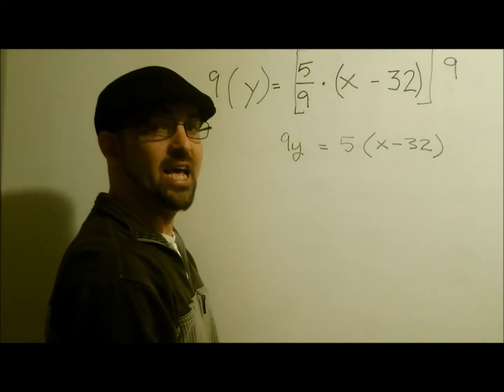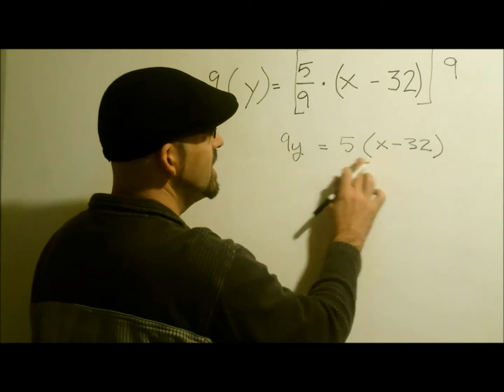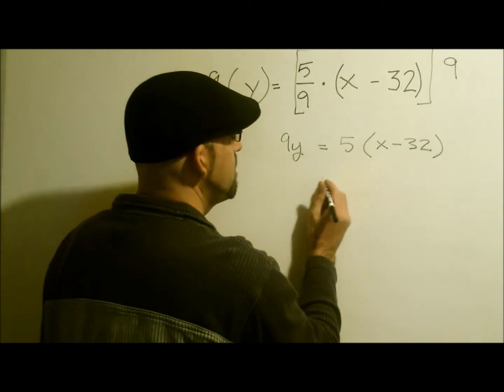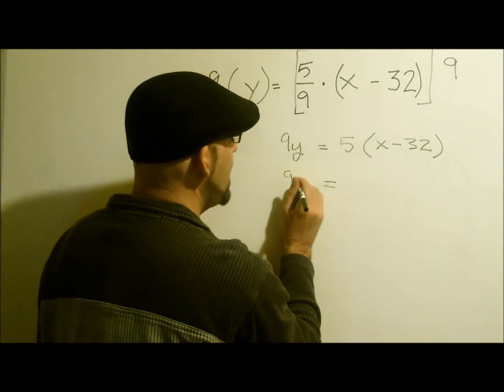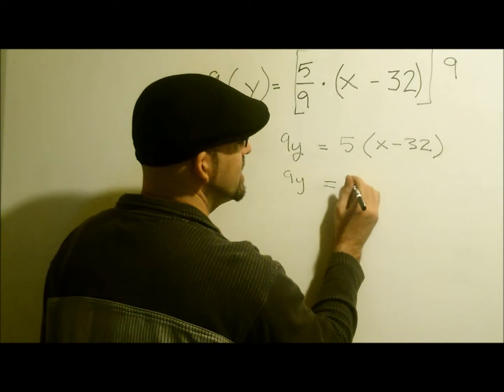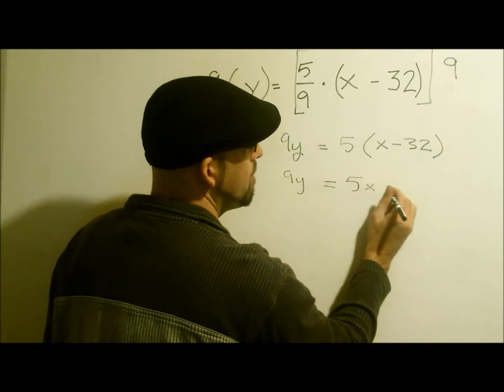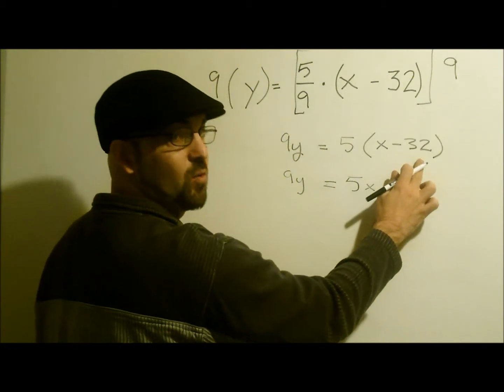We need to get the x on one side of the variable. That's the one that we're isolating. Let's distribute the 5. We have 9y equals 5x minus 5 times 32. That's 160.